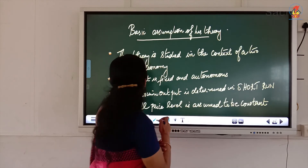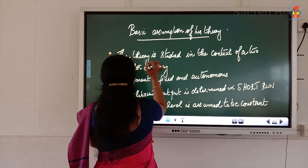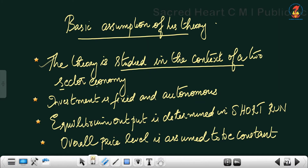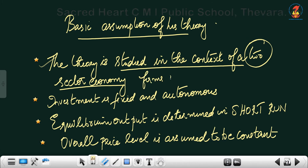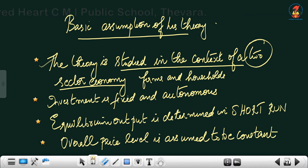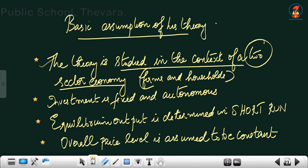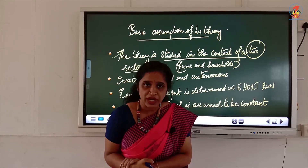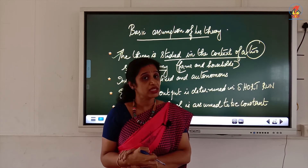Now let us see the assumptions. The theory is studied in the context of a two-sector economy. The two sectors are firms and households. Two-sector economy means the presence of firms and households; a three-sector economy would include government. Keynes limited his theory to this two-sector model.